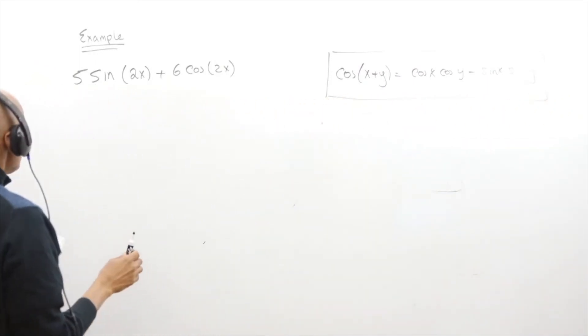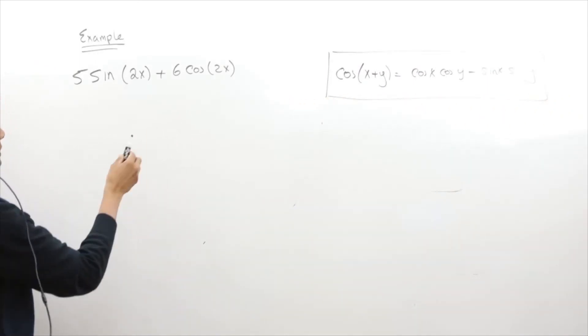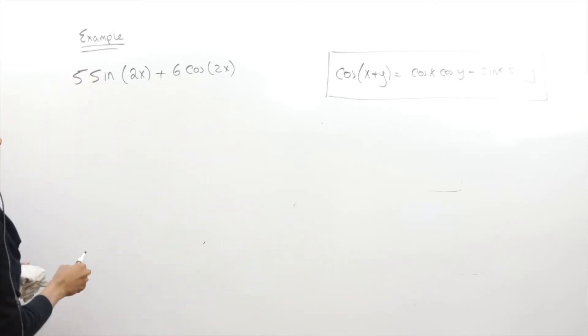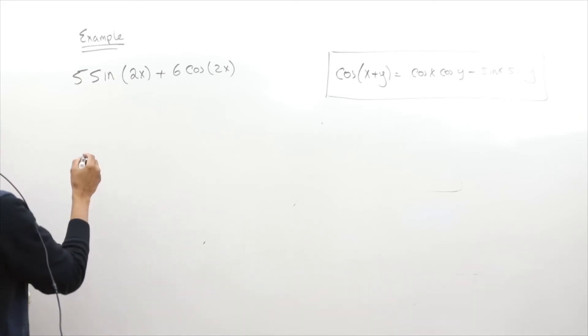So my idea is that if I want this to kind of look like this, somehow I have to get a cosine and a sine over here and a minus sign actually. So to do this right...